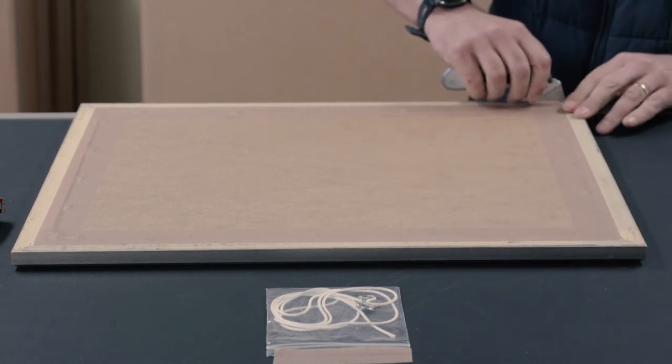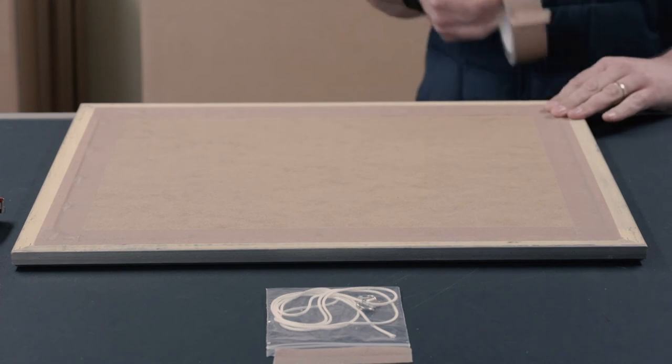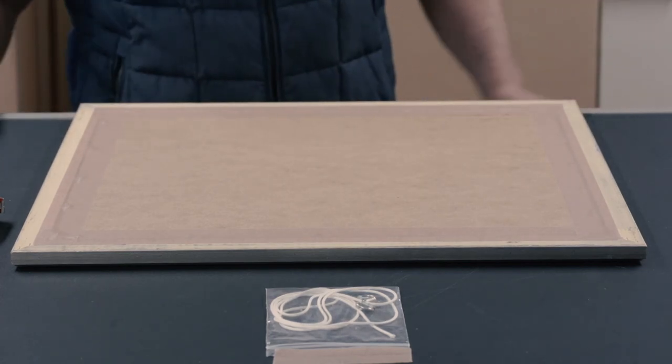If your frame comes with D-rings as the hanging fixture, you can now fit these onto your frame. You can find a video link for this below. Leave a like on the video and let us know how taping up your artwork went in the comments below. Thank you for watching this tutorial by EasyFrame.